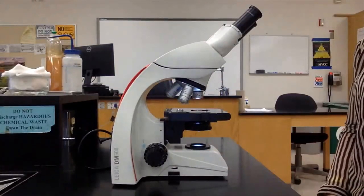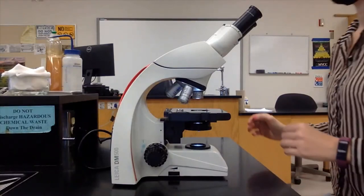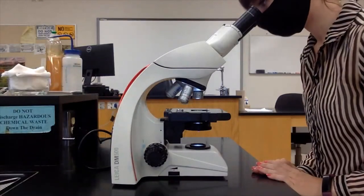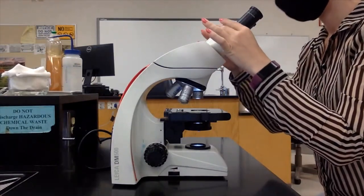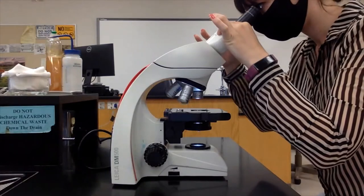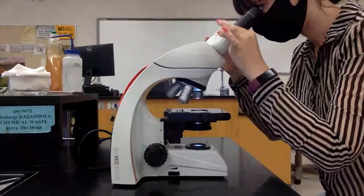When you put your eyes to the ocular lenses, you may only be able to see through one lens at a time. This is because you do not have the microscope set at the correct interpupillary distance for you.